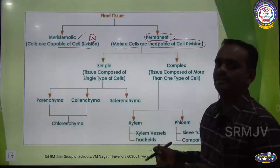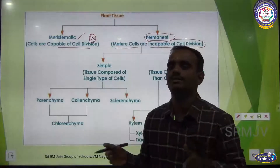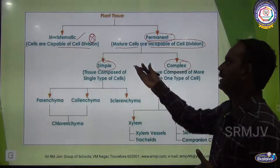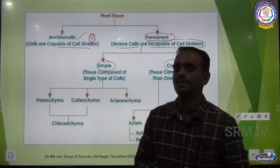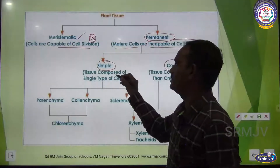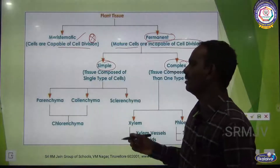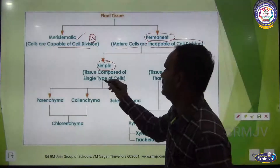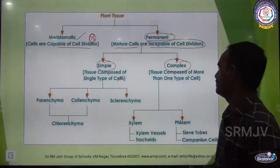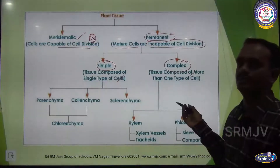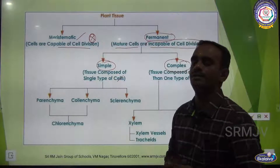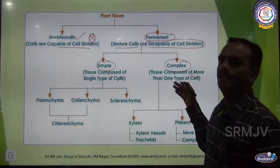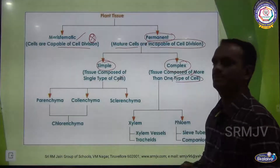Permanent tissue is broadly classified into two types: one is simple permanent and another one is complex permanent. Simple permanent means the tissue is made up of similar cells — single type of cells. Complex permanent means the tissue is composed of more than one type of cells.